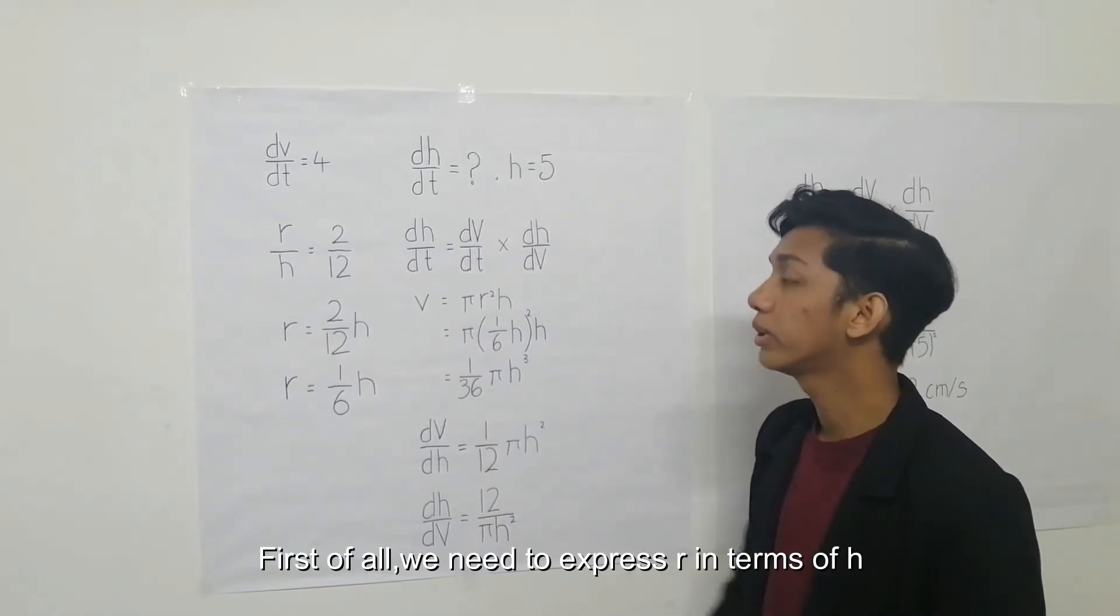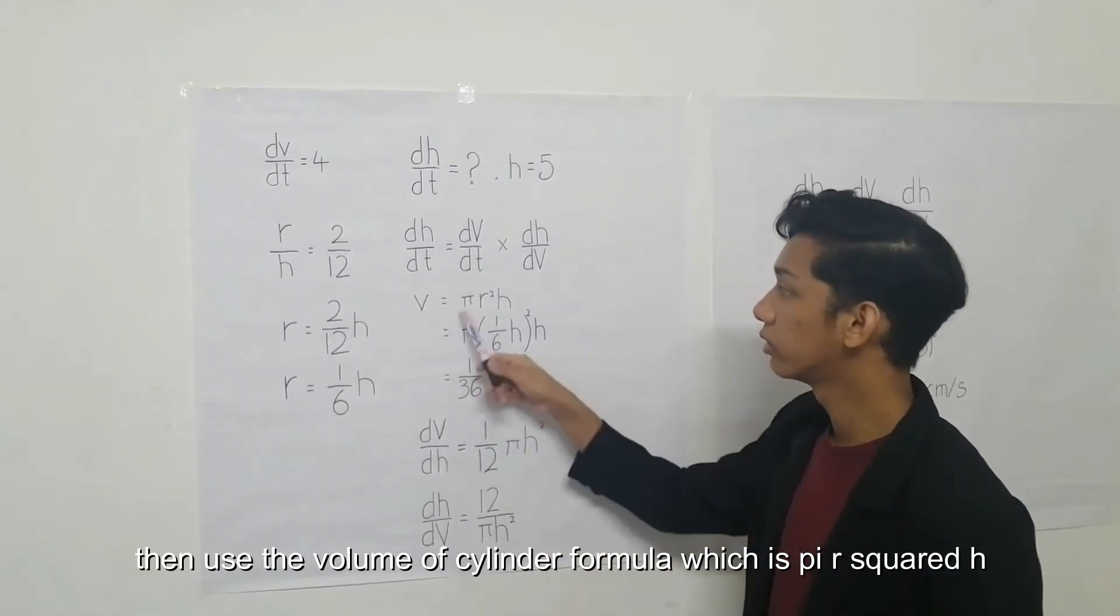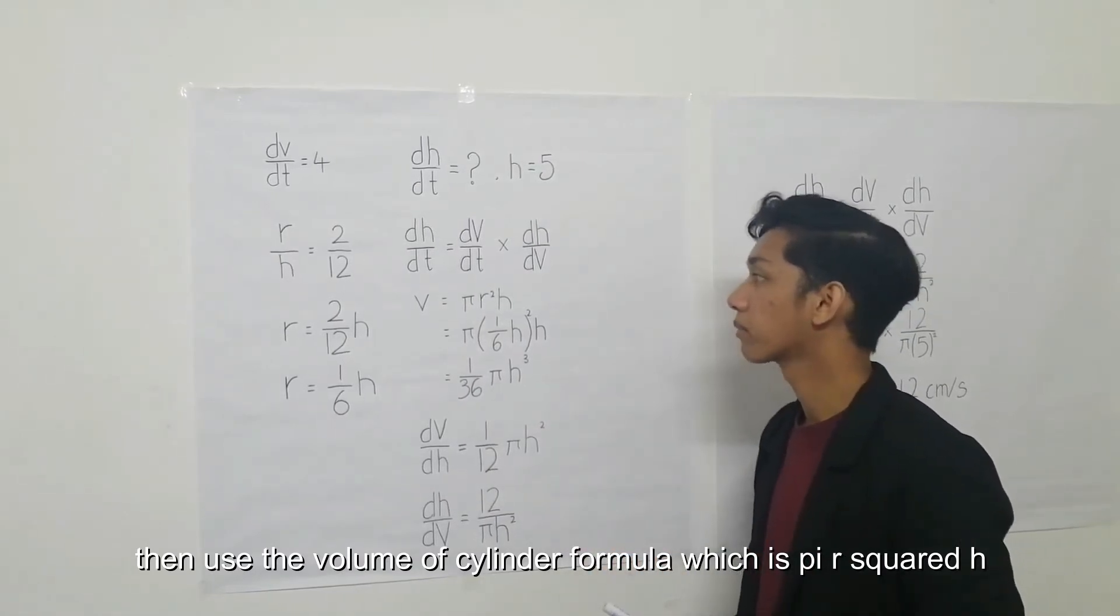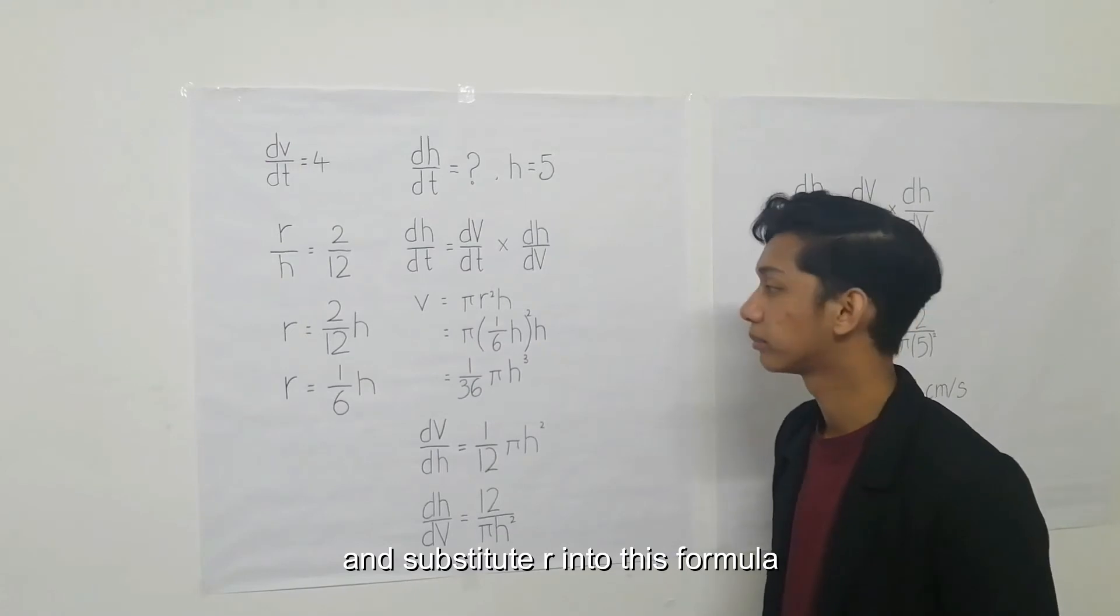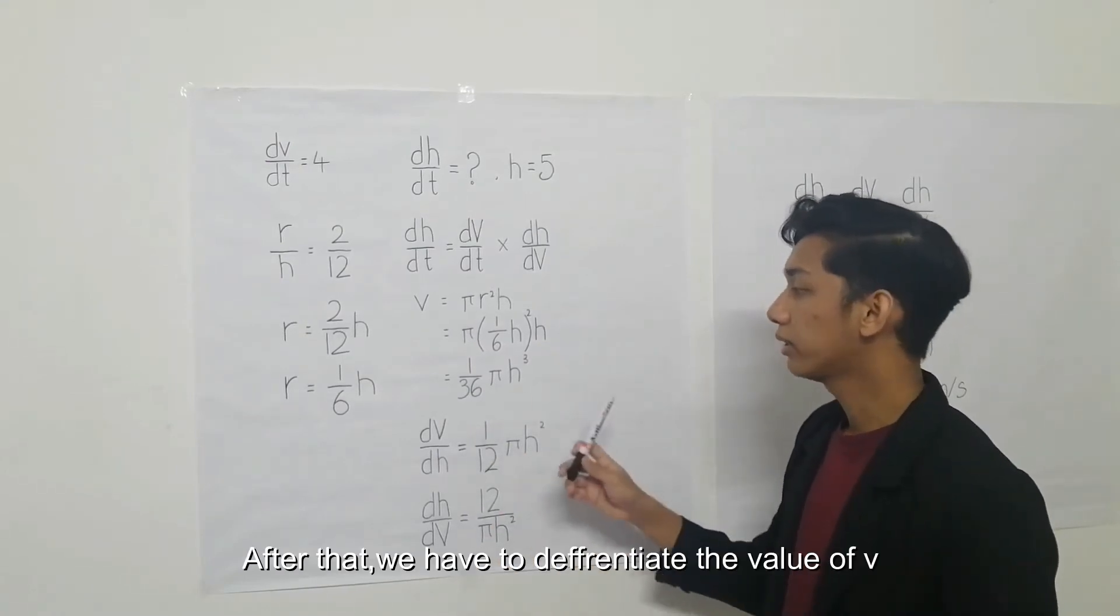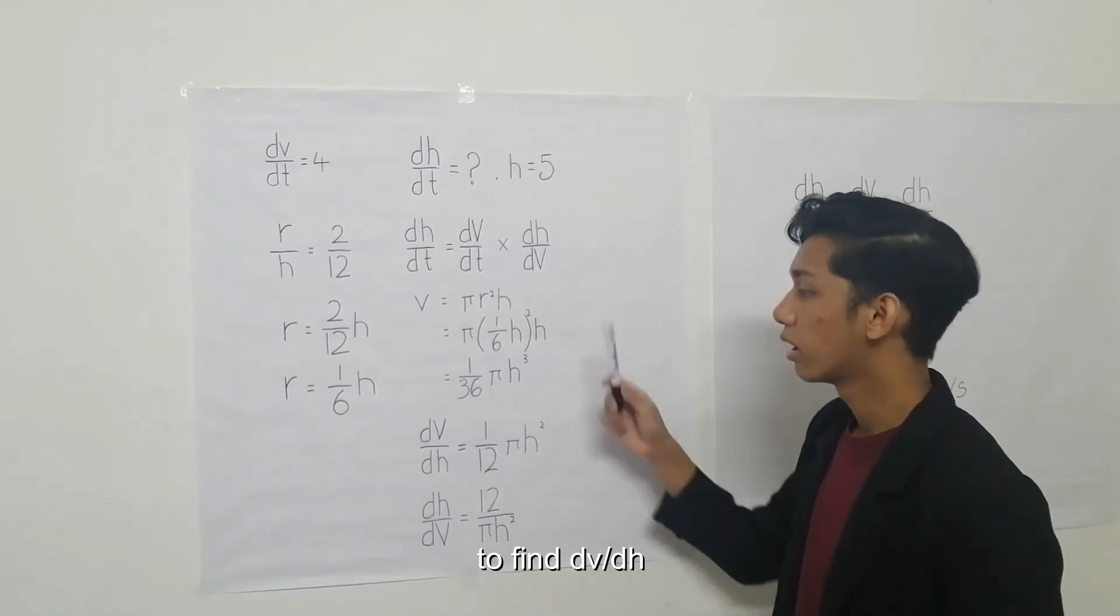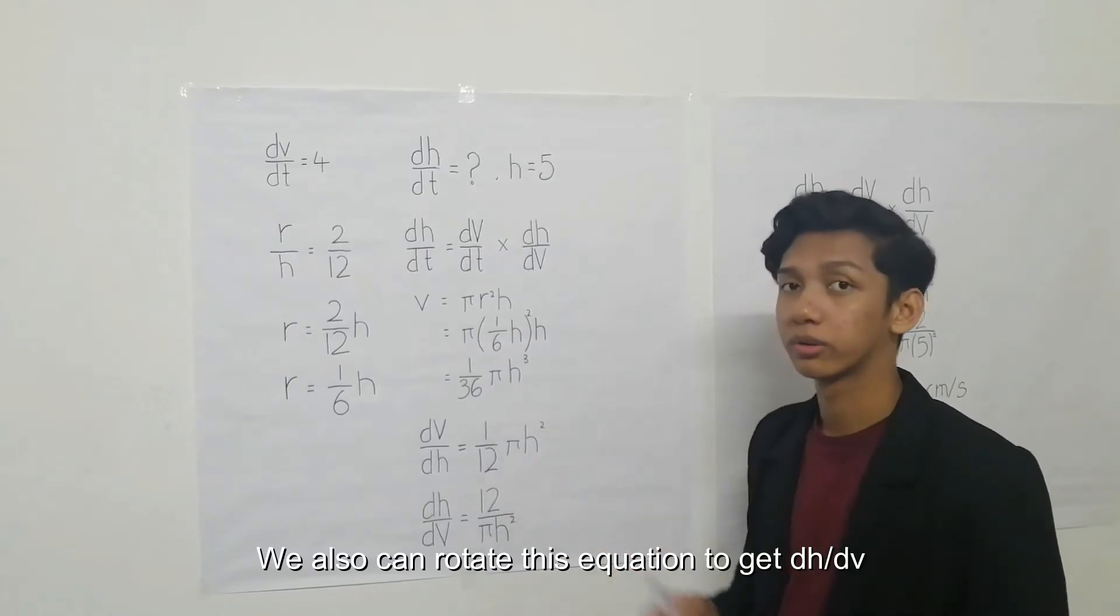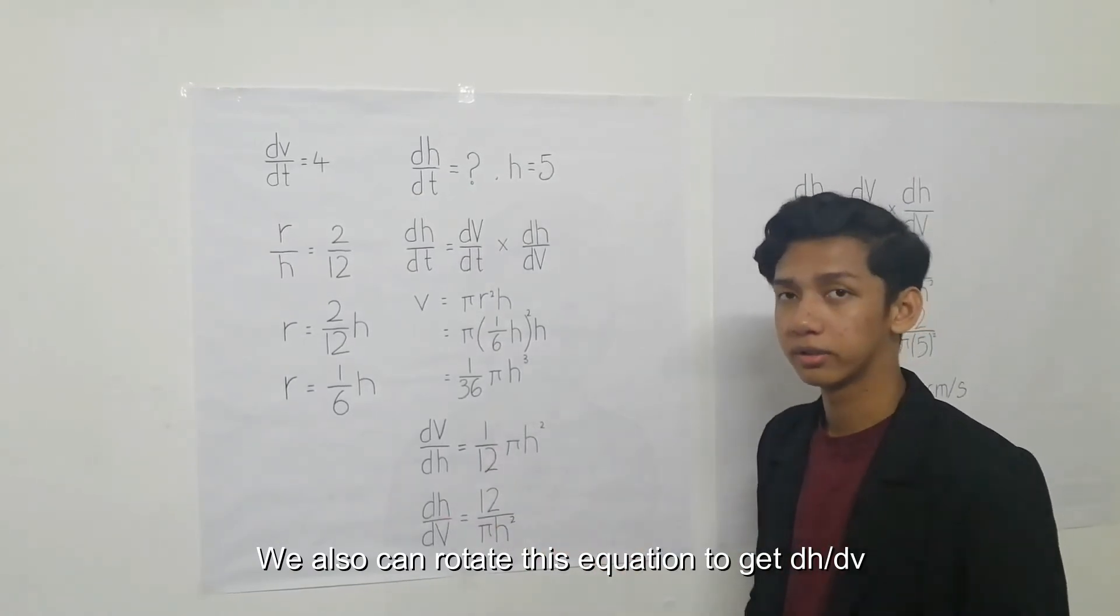First of all, we need to express r in terms of h. Then, use the volume of cylinder formula which is πr²h and substitute r into this formula. After that, we have to differentiate the value of V to find dV/dh. We also can rotate this equation to get dh/dV.